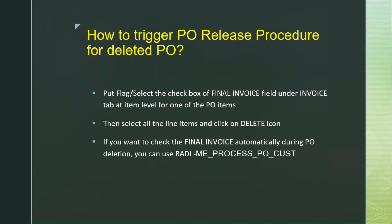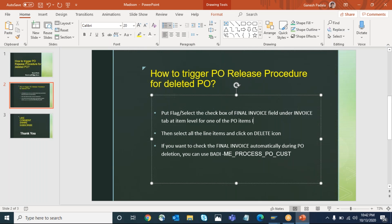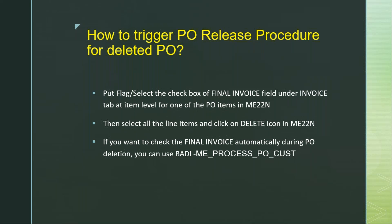When you go to transaction ME22N, you just put the flag or select the checkbox of Final Invoice, which is at the item level. So that, although you deleted the PO line items, the release procedure will still be triggered. In ME22N, you just keep the Final Invoice flag, and after that you delete the line item, so that the release strategy will still be active. If you don't keep that Final Invoice flag, then the release tab will disappear.